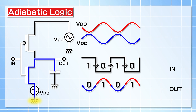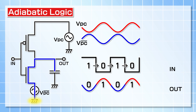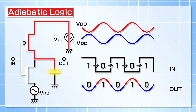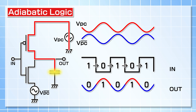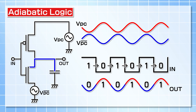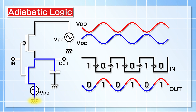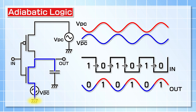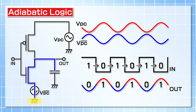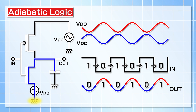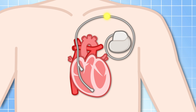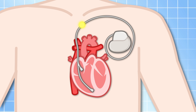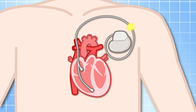On the other hand, when the input signal changes from 0 to 1, the lower side transistor is ON. Hence, the energy stored in the output node is only partly lost through the transistor. Power reduction is achieved by recovering the energy in this process.